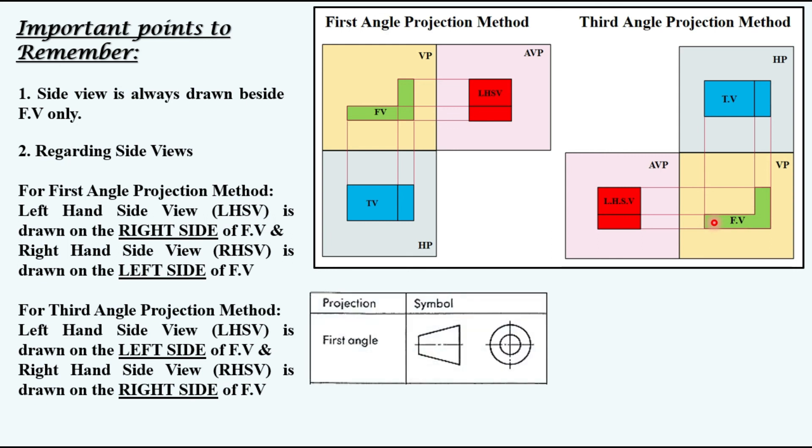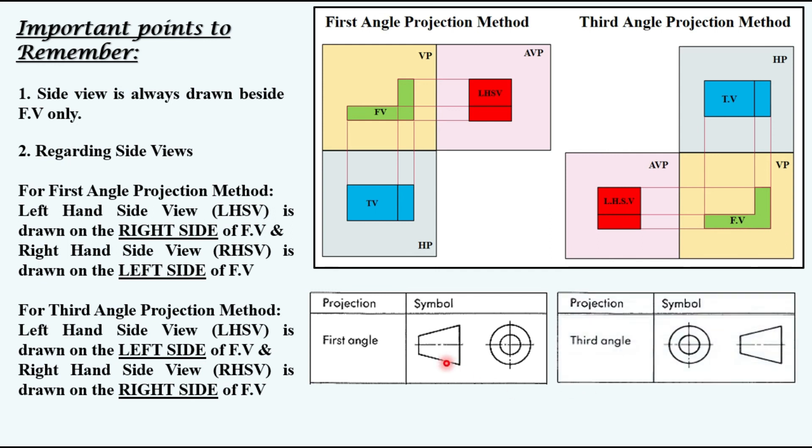There are also symbols used to indicate which method is used to draw the given orthographic projections. This is the symbol used for the first angle projection method and this is the symbol used for the third angle projection method.